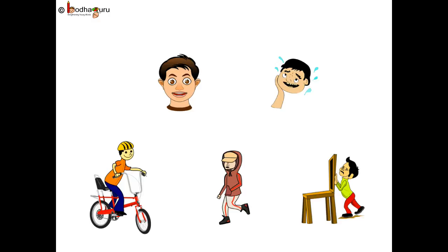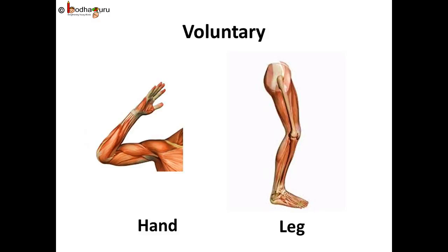If you want to run, walk, ride a bike, wave your arms around, or even eat your favorite sandwich, it is your voluntary muscles which move your arms, legs, and body around. But they cannot do that unless your brain sends the right message to the right muscle.